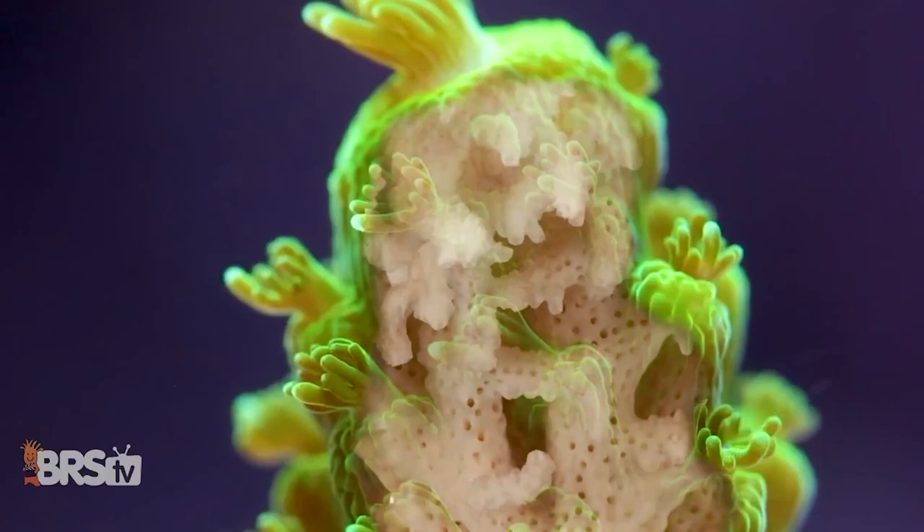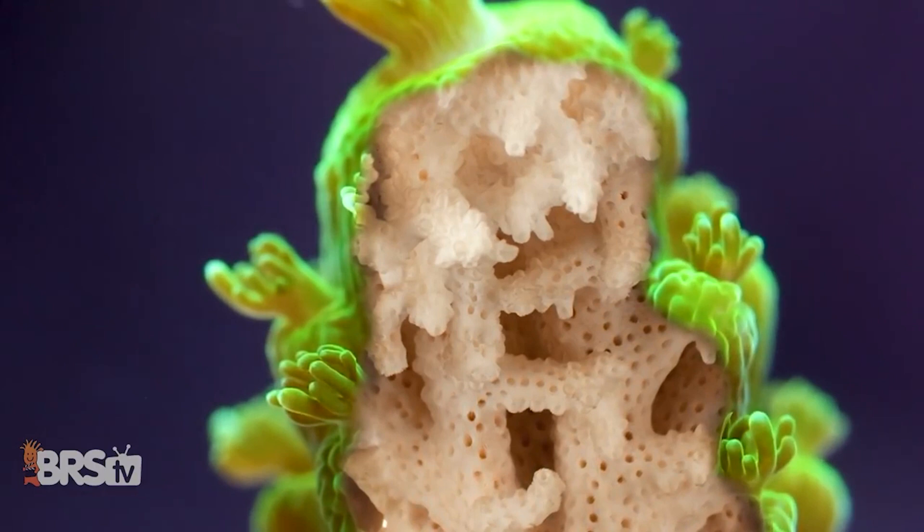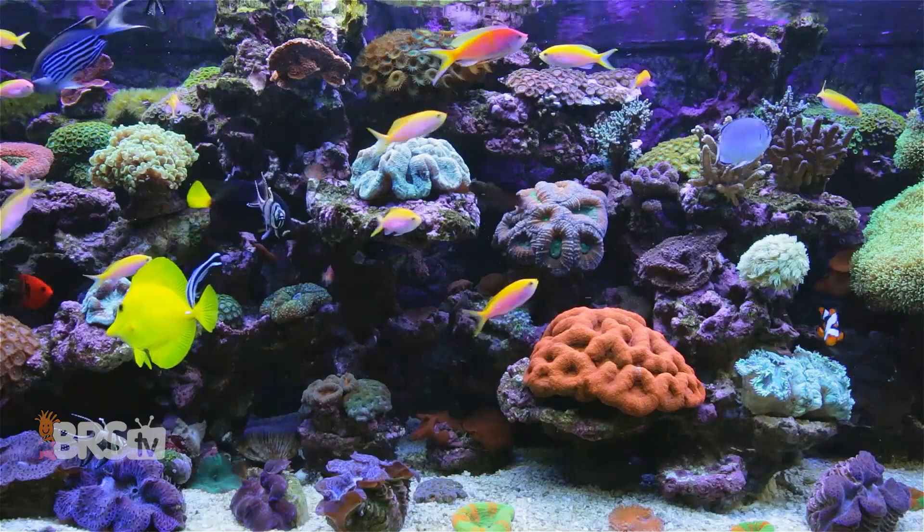Strontium is an element found in seawater that has a similar molecular shape to calcium and magnesium and appears to play a similar role in the building of aragonite coral skeletons, as well as in the bones, shells, and bodies of other marine organisms.